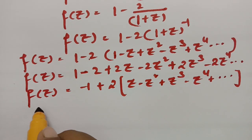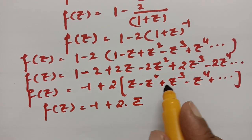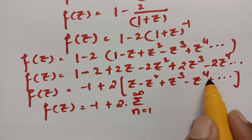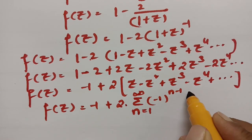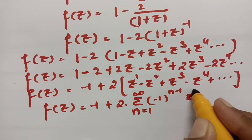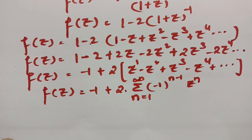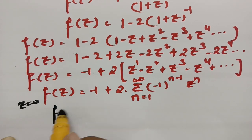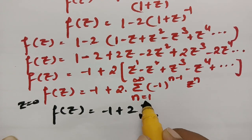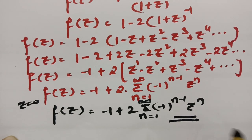And therefore our expansion will be f(z) = minus 1 times 2 times sigma n = 1 to infinity. The alternate plus and minus can be written as (-1)^(n-1) into z^n. So this is the expansion for z = 0. For the case z = 0, we have f(z) = -1 · 2 · Σ(n=0 to ∞) (-1)^(n-1) · z^n.